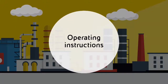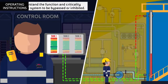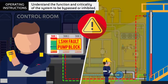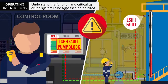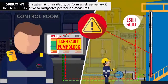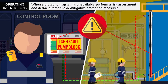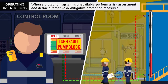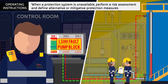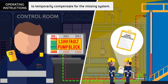Operating instructions. Understand the function and criticality of the system to be bypassed or inhibited. When a protection system is unavailable, perform a risk assessment and define alternative or mitigative protection measures to temporarily compensate for the missing system.